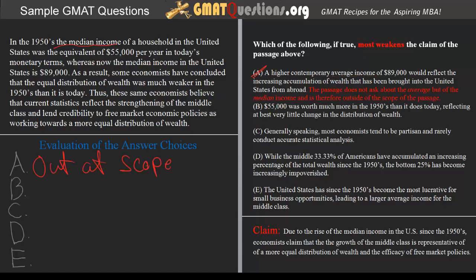Answer choice B: $55,000 was worth much more in the 1950s than it does today, reflecting at best very little change in the distribution of wealth. This might seem like a decent answer choice since it tries to nullify the claim by stating there hasn't been much change in wealth distribution. However, it justifies this by claiming $55,000 was worth more in the 1950s, whereas the passage clearly states that $55,000 is already being measured in today's monetary terms. So B is clearly incorrect because it contradicts the information given in the passage.